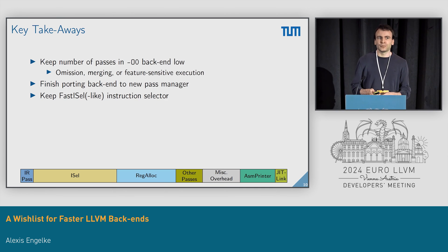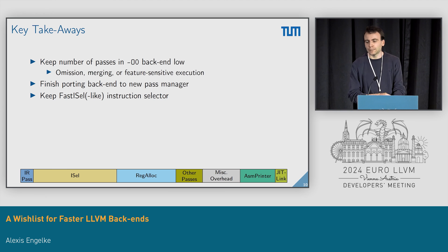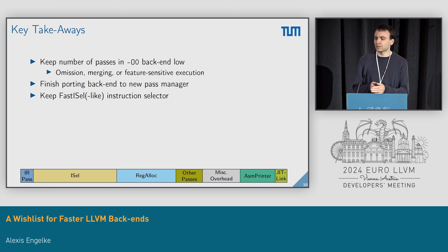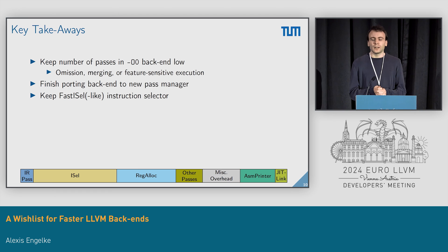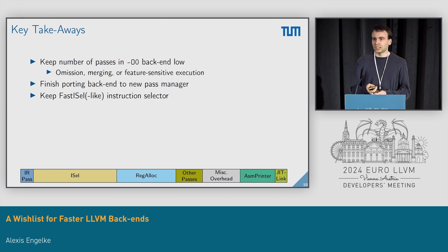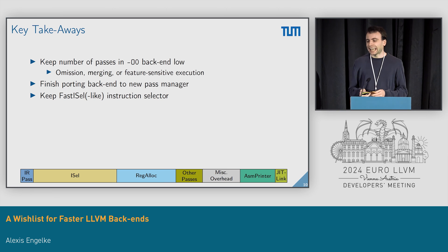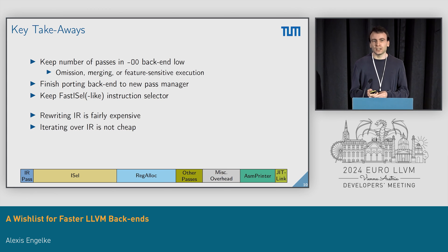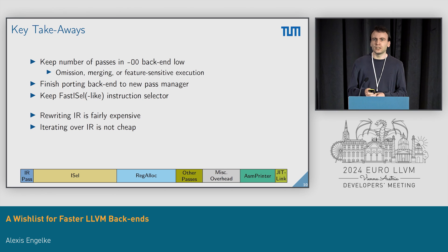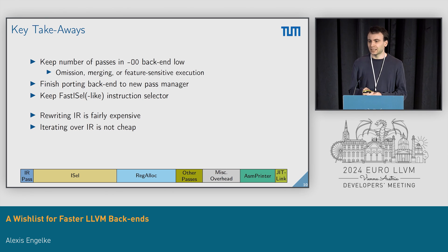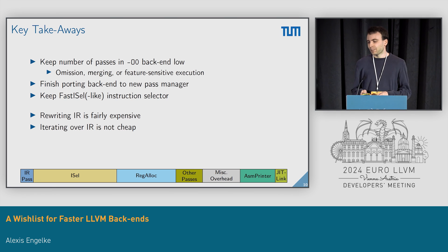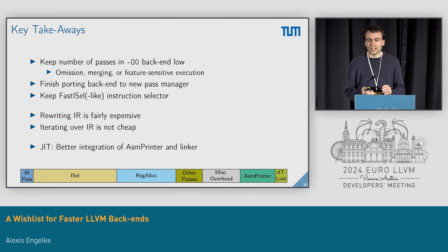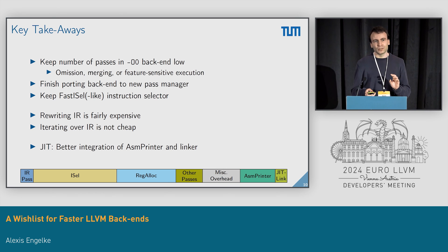So what are the key takeaways? The goal should be to keep the number of passes in the O0 pipeline low — either by omitting them, merging them, or making execution of some passes feature-sensitive so they only run when required. Finishing the port of the backend to the new pass manager would be great. Keeping a FastISel-like instruction selector is very important for fast compile times. Rewriting IR is expensive — both LLVM IR and machine IR — and iterating over the IR also has a cost. For the JIT use case, a better integration of the assembly printer and the linker would also be a very good thing to pursue.